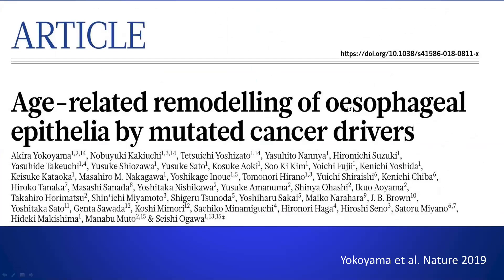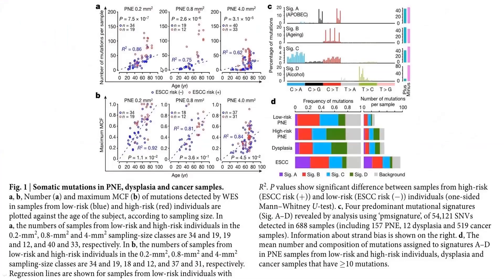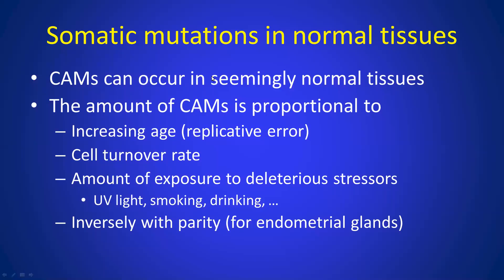Another paper published last year looked at the esophageal epithelia. Not only does age matter, but exposure to risk factors — for example, drinking or smoking — also increases the mutation rate. To summarize: cancer-associated mutations can occur in seemingly normal tissues. The amount of CAMs is proportional to increasing age, replicative error, and cell turnover rate, and also the amount of exposure to deleterious stressors such as UV light, smoking, drinking, and environmental or occupational hazards. And inversely with parity for the endometrium.